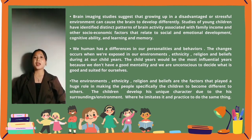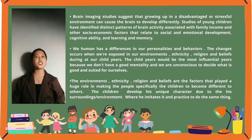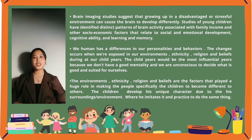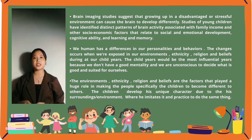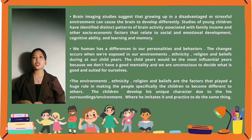The environment, ethnicity, religion, and beliefs are factors that play a huge role in making people, especially children, different from others. A child develops his unique character due to his surroundings or environment. For example, if your family is active in doing responsibilities and shows love to each other, you as a child will also develop those characteristics as you grow.